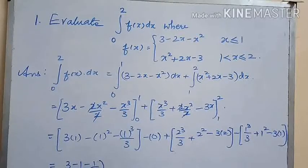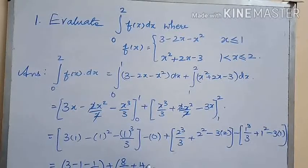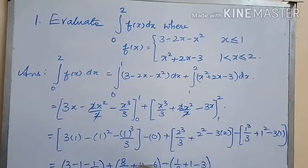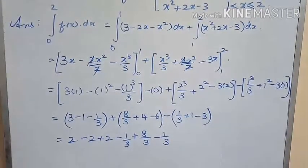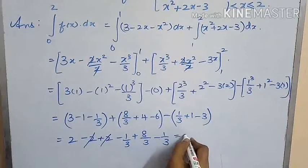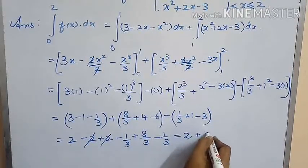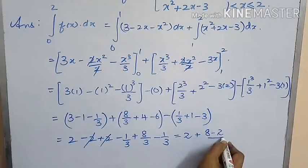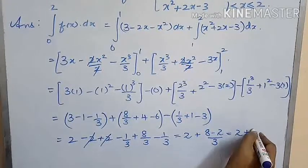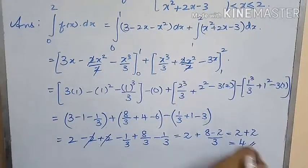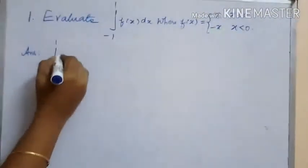After simplification we get 3 − 1 − 1/3 + 8/3 + 4 − 6. Separating the whole numbers and fractional parts, we get 2 − 2 + 2 − 1/3 + 8/3 − 1/3, which equals 2 + (8 − 2)/3 = 2 + 6/3 = 2 + 2 = 4.